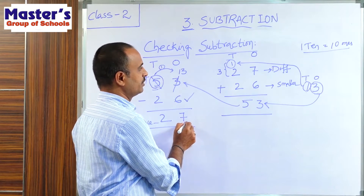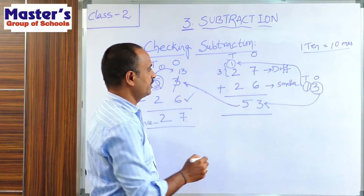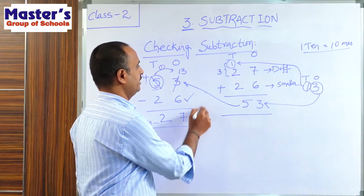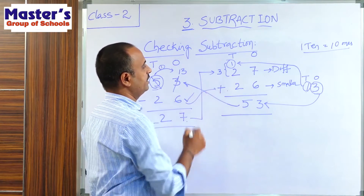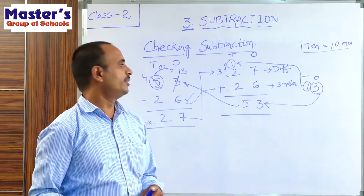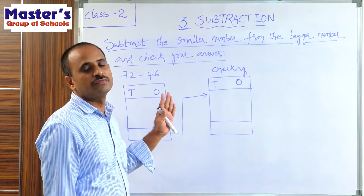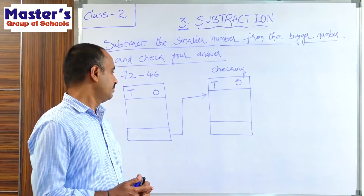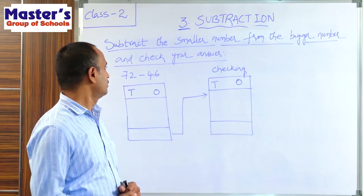Since we added the difference to the smaller number and got the greater number, our subtraction is correct. To check subtraction: write the difference as the first number, write the smaller number as the second number, and do addition. If we get the greater number, our subtraction is correct; if not, it is wrong.